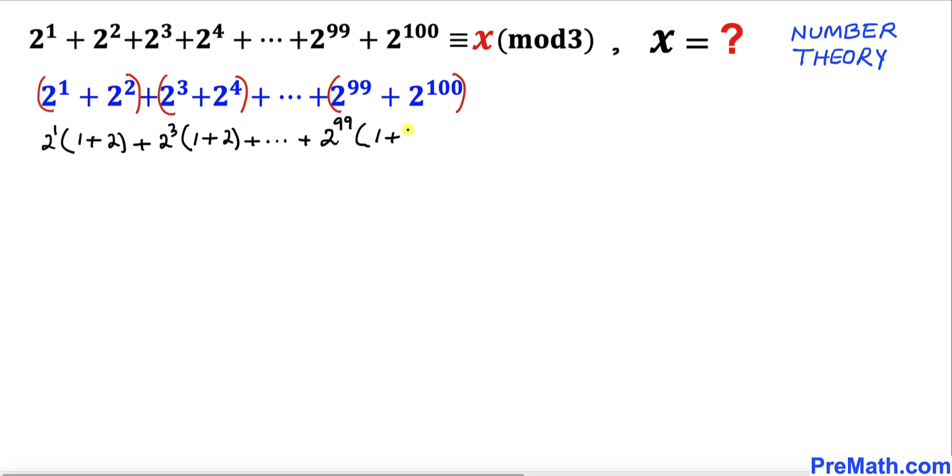Now we can see that in parentheses, 1 + 2 is 3, and this one is 3 as well, and all the way this one is 3 as well. In the next step, 1 + 2 has been simplified to 3, and likewise all these are 3s.